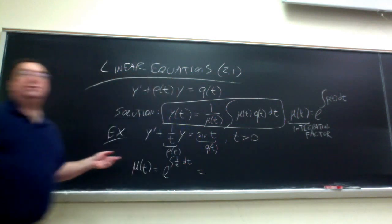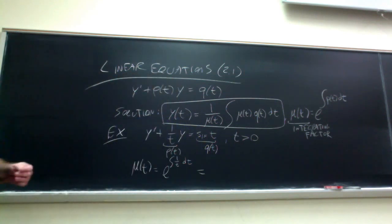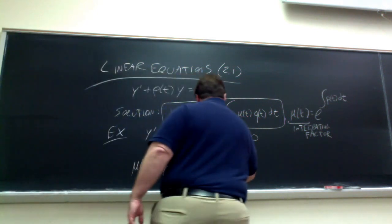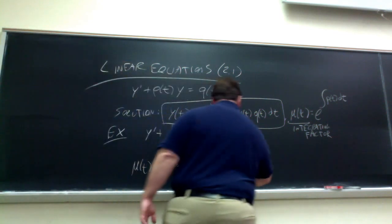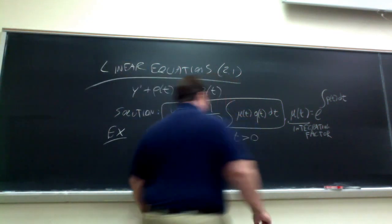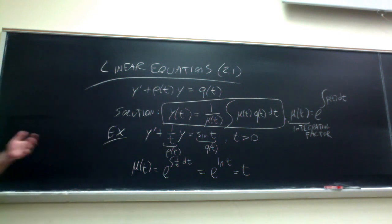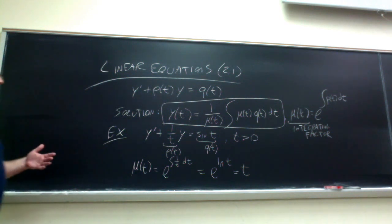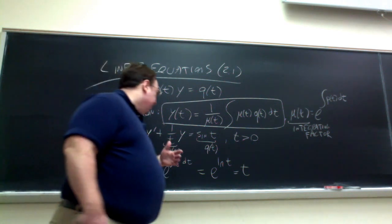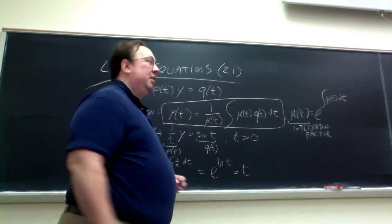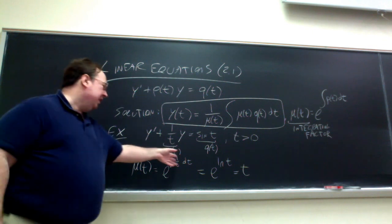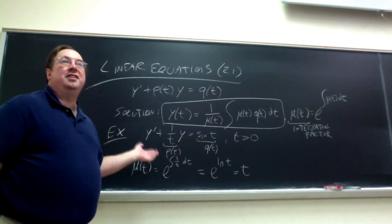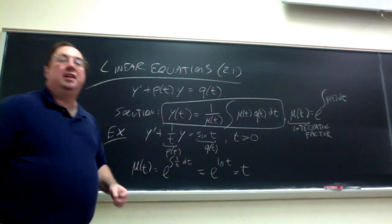So mu of T is e to the integral of my P of T, which is 1 over T. The integral is natural log, and it simplifies to T. That sort of thing is going to happen a lot — these properties of exponential and logarithmic functions come into play in these examples. A lot of times you just have something else that's simple to integrate, like e to a constant, so you get e to a constant times T.